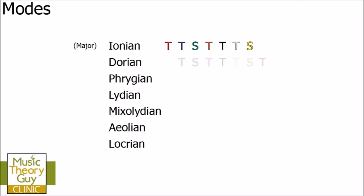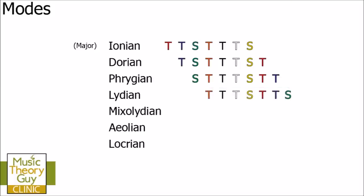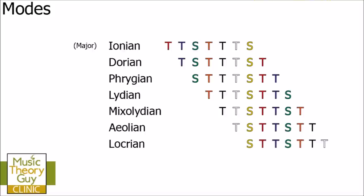Let's have a look at the other modes. Dorian's pattern is tone, semitone, tone, tone, tone, semitone, tone. All that's happened is we've shifted the first instruction of Ionian and put it at the end. Phrygian starts on a semitone: semitone, tone, tone, tone, semitone, tone, tone — again, the first instruction of Dorian moved to the end. This pattern keeps going through Lydian, Mixolydian, Aeolian, and Locrian. The tones and semitones are the nuts and bolts of each mode — they tell us what notes are included.